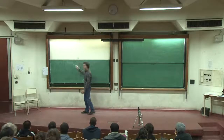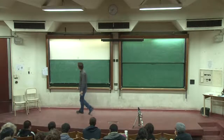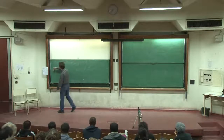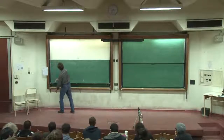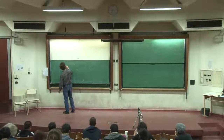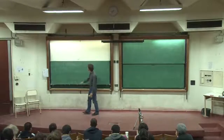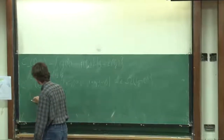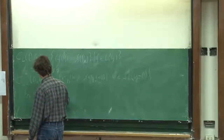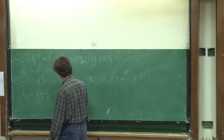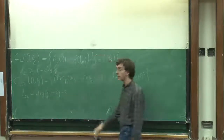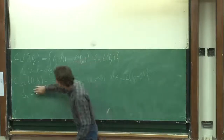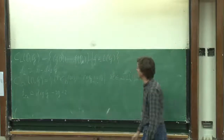It turned out that these codes have computable dimensions, and there is a bound on the minimum distance. In the evaluation case we get n minus the degree, where n stands for the number of rational places chosen. In the differential case we get a lower bound: the degree of the divisor minus 2g plus 2, where g is the genus of the function field. I should note these are bounds, not equalities.